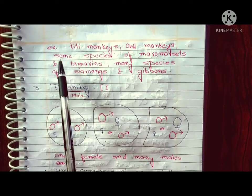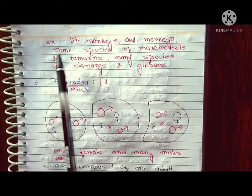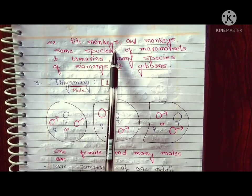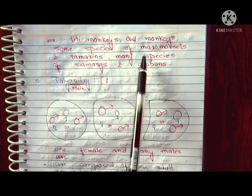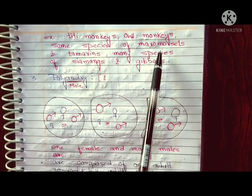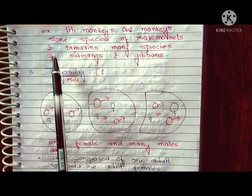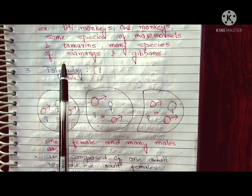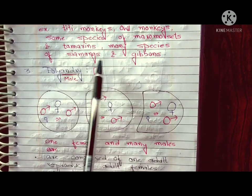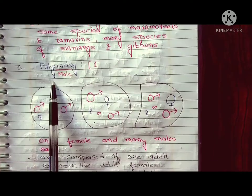Examples of monogamous primates include titi monkeys, owl monkeys, some species of marmosets and tamarins, and many species of siamangs and gibbons.